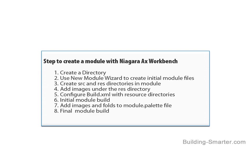Step 1, we're going to create a new directory to house the components of our modules. Step 2, we're going to use the new module wizard to create the initial files of our module. Step 3, we're going to create two sub-directories in the root of our module, one being src, the other one being res.